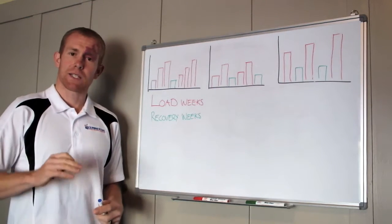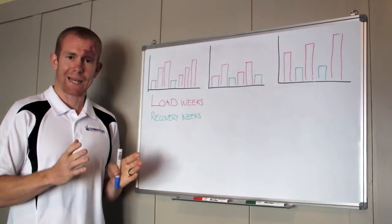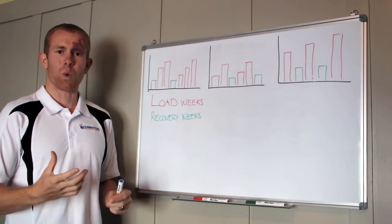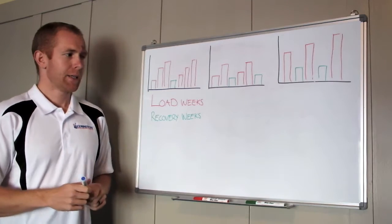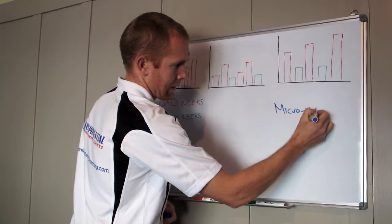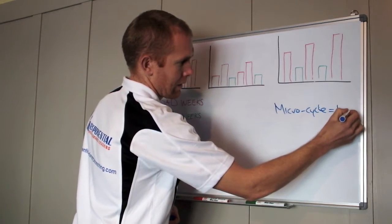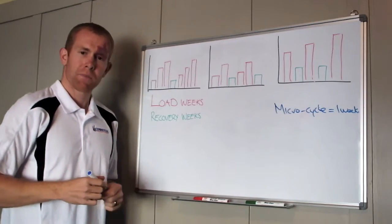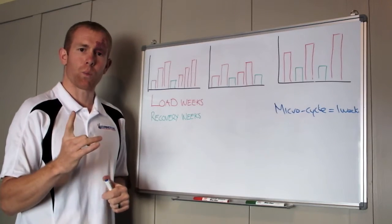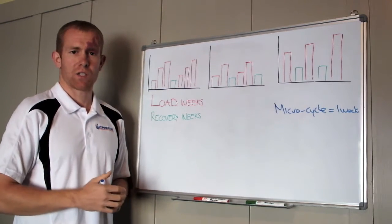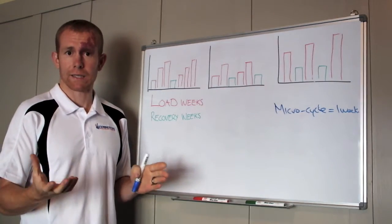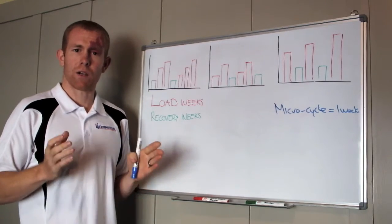Now today's question is about the periodization or the planning of your microcycles. Microcycles are typically a week, a week-long block of training. It's only sort of become common to make a microcycle one week long just in Western society and how we work. We've got seven days, five days of work, then the weekend, so that seven day block ties in quite nicely with our calendar.